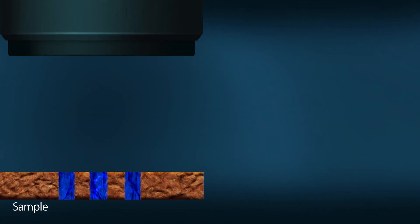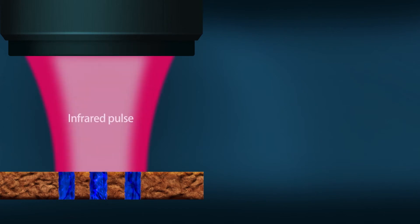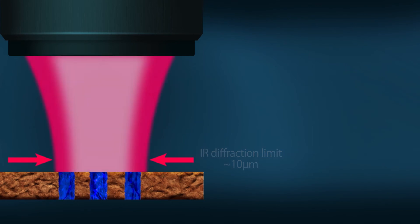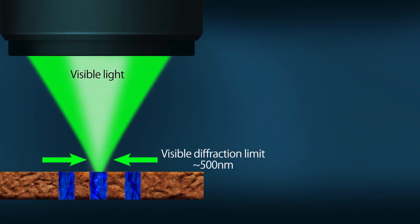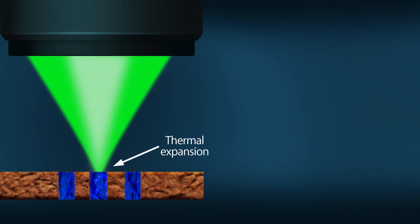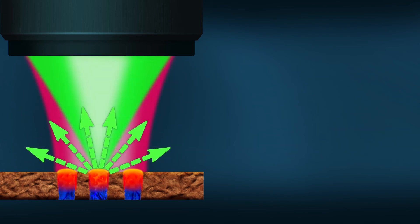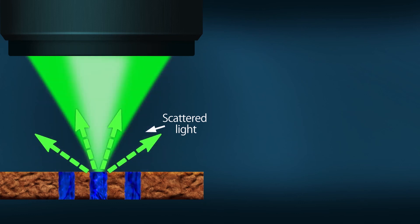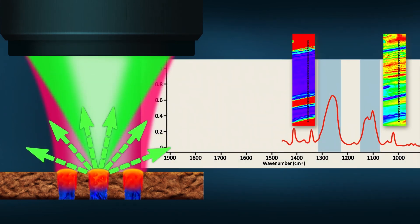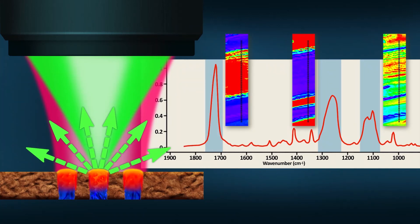It all starts with the microscope objective — a reflective Cassegrain style. Through that we shine a pulsed infrared laser beam, and being infrared it's fairly broad, maybe around 10 microns. At the same time we're shining in our probe beam, the green that's about 500 nanometers. The infrared generates thermal expansion, and that thermal expansion changes the way the green light is reflected or scattered back. So as we're tuning our infrared laser from one wavelength to another, we monitor the intensity of the green light reflected back, and from that we calculate out what is essentially a pure infrared spectrum collected in reflection mode.